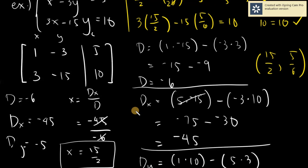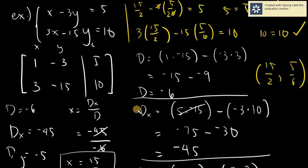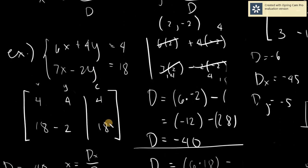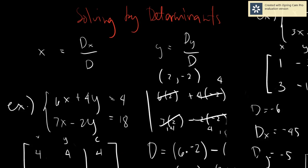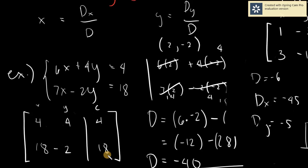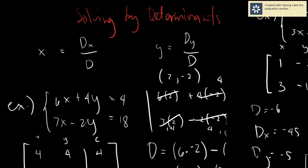This is for our determinants. This is one of the most interesting ways of solving systems of linear equations using determinants. Determinants use numerical coefficients — very easy, very fast — though it can be a little confusing. But once you master it, you can do mental solving for systems using this method. Thank you for listening. Assalamualaikum warahmatullahi wabarakatuh.